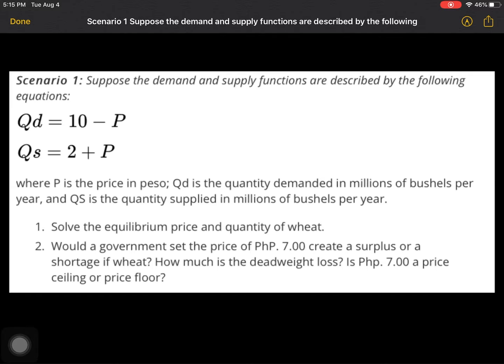Where P is price in peso, QD is the quantity demanded in millions of bushels per year, and QS is the quantity supplied in millions of bushels per year.